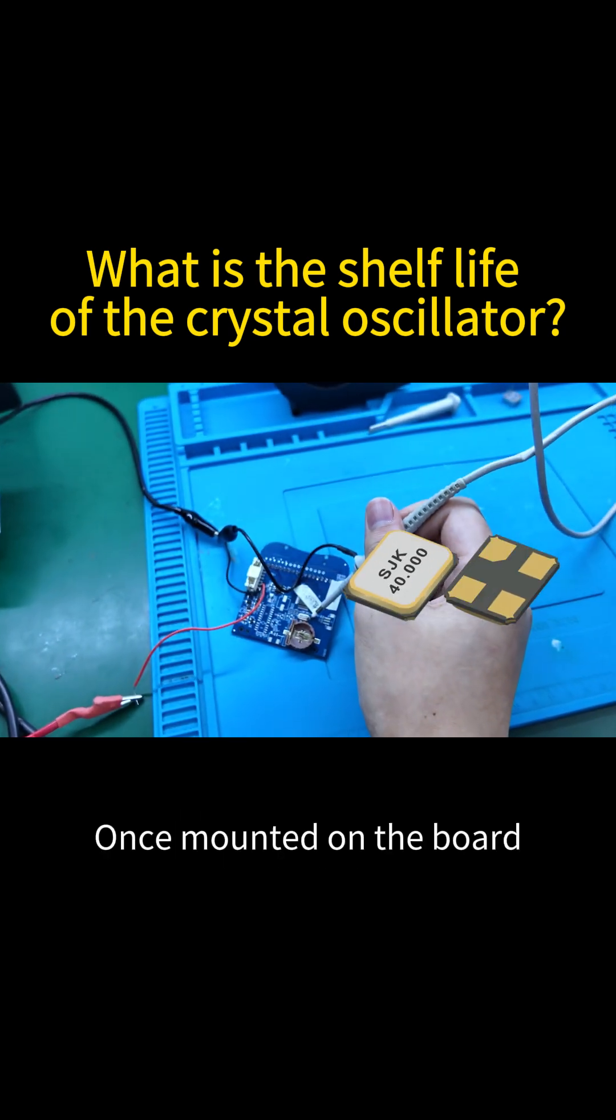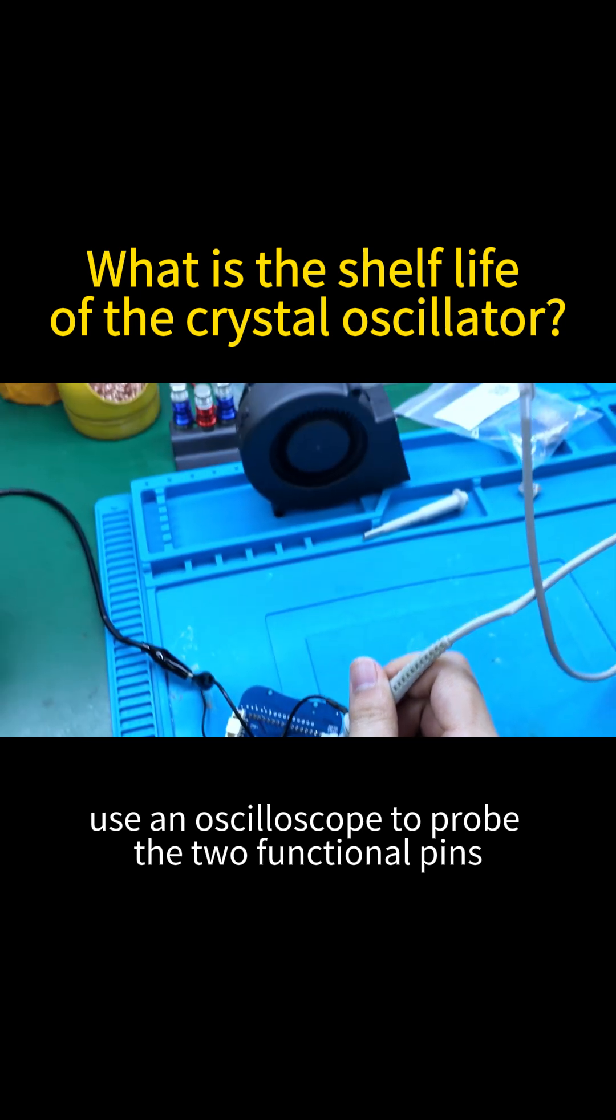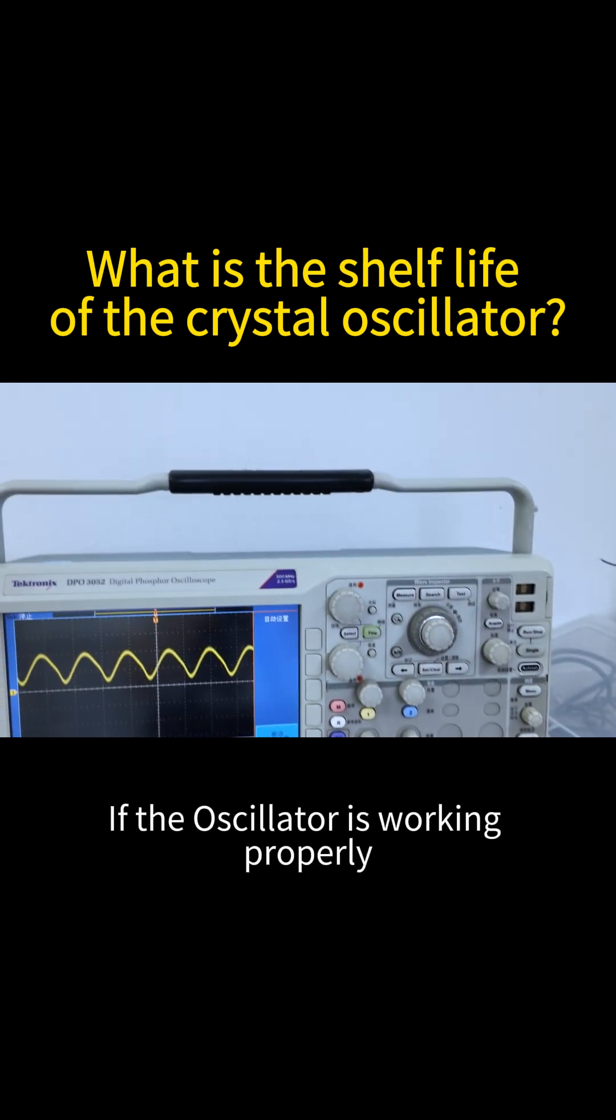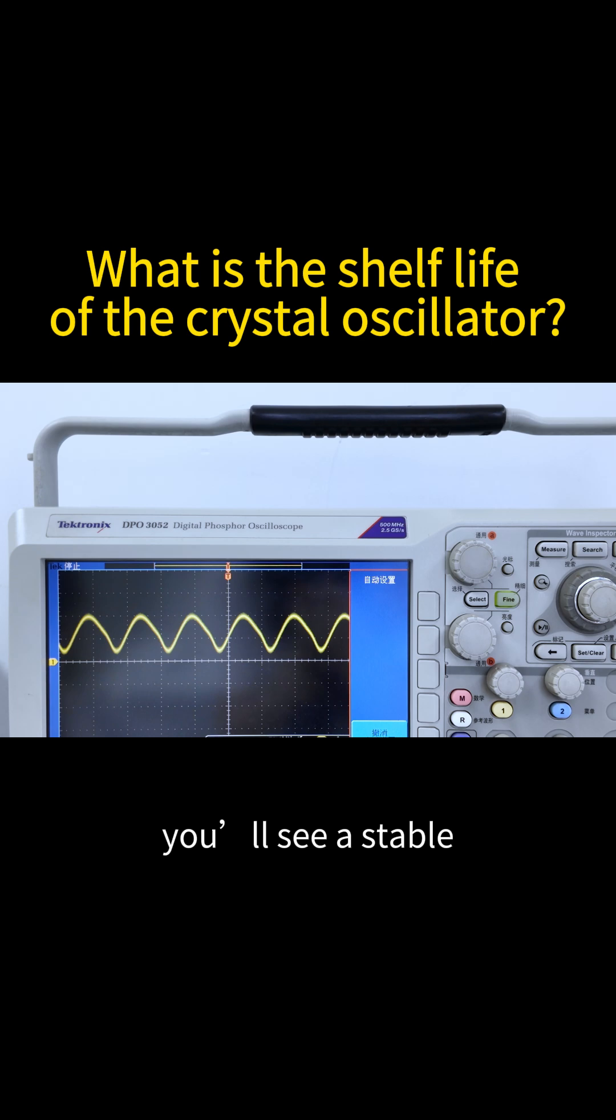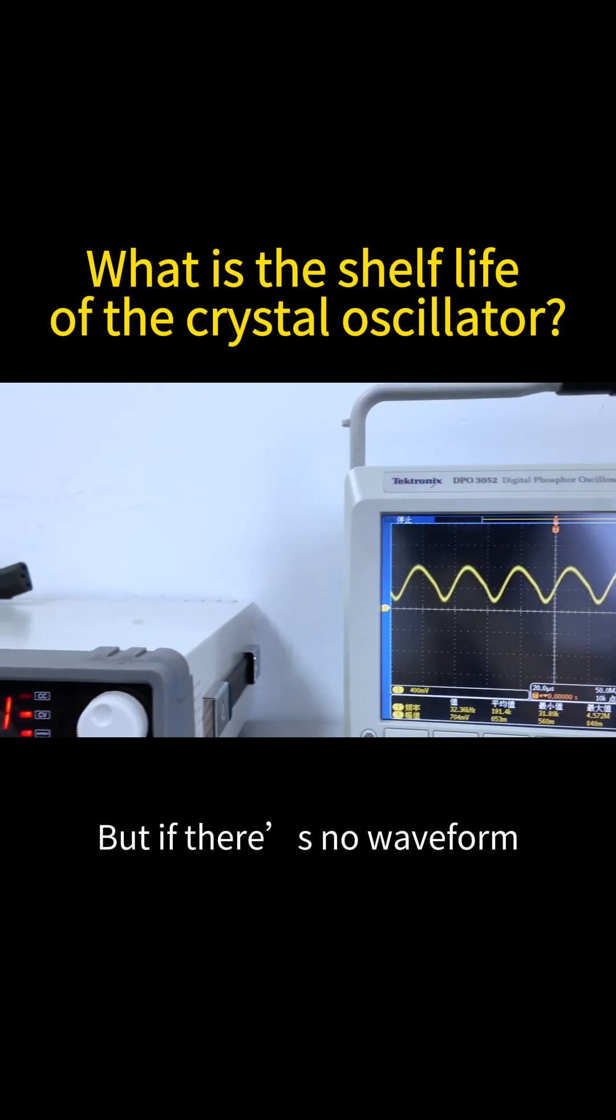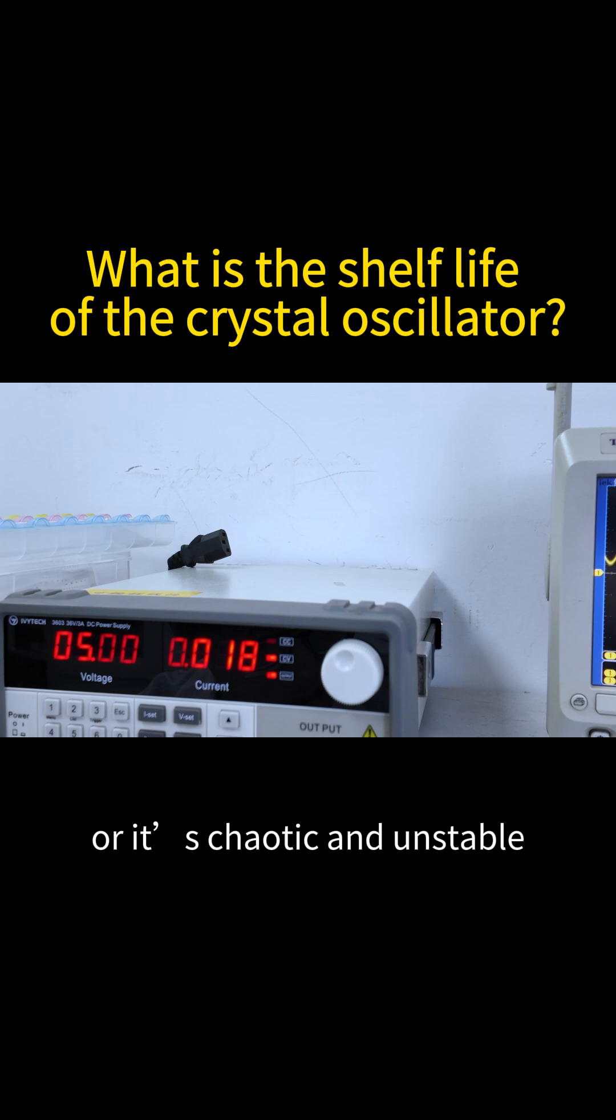Once mounted on the board, use an oscilloscope to probe the two functional pins. If the oscillator is working properly, you'll see a stable, periodic waveform. But if there's no waveform, or it's chaotic and unstable, well, that likely means it's failed.